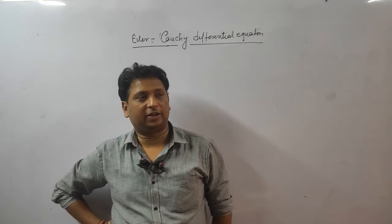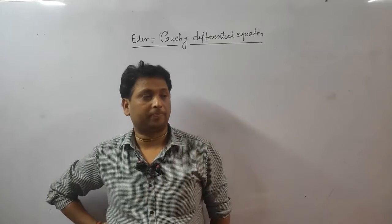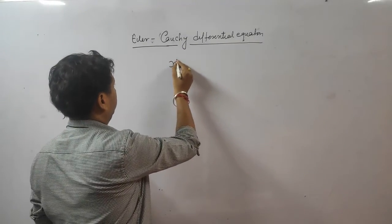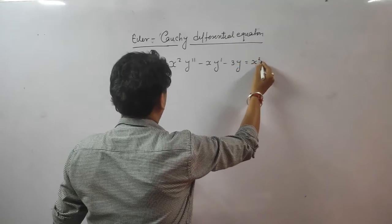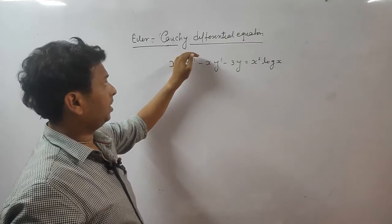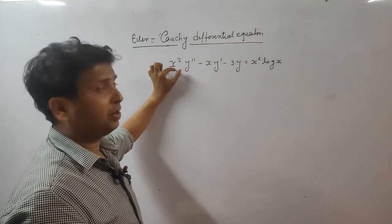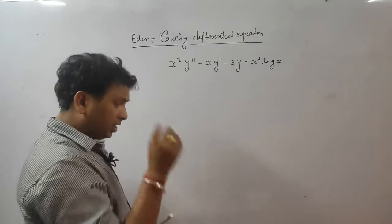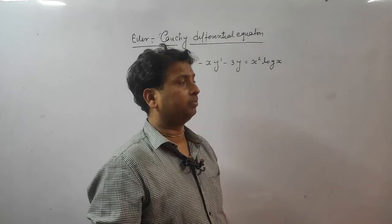Hello friends, I'm going to teach an important topic of differential equations called the Euler quasi differential equation. First, how do we recognize this type of question? x² y'' - x y' - 3y = x² log x. Here you can easily recognize this is Euler quasi — actually it is known as the Cauchy-Euler equation. y'' is always multiplied with x², y' multiplied with x, and y alone. This type of differential equation will definitely have one question in your exam.